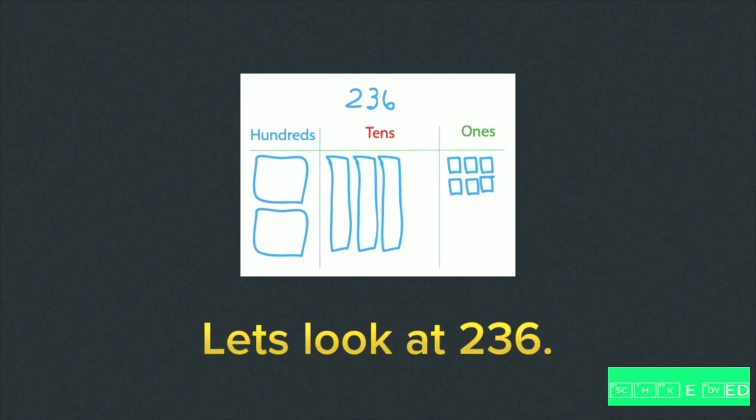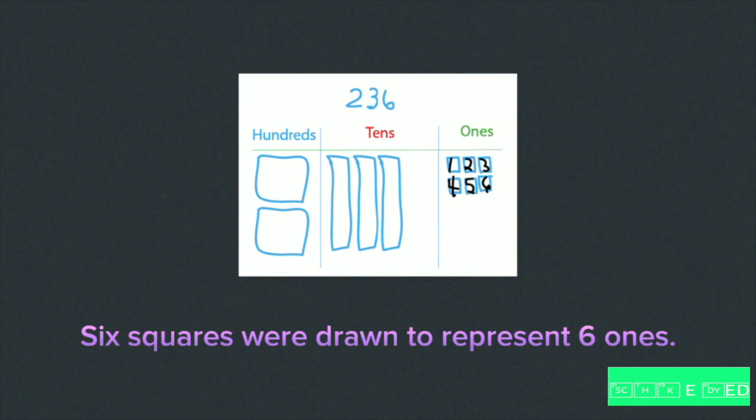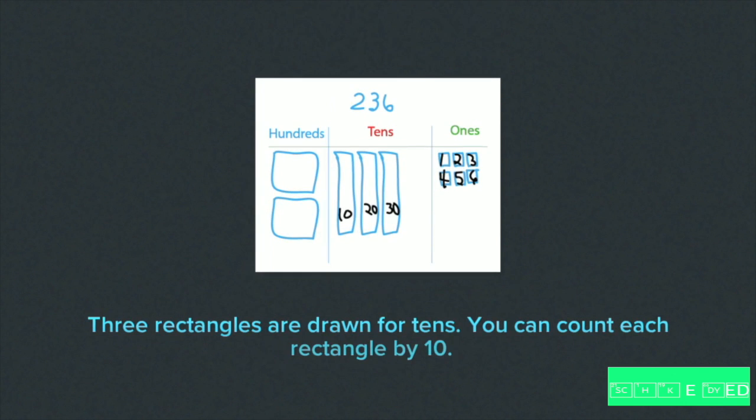Now let's look at the number 236. Six squares are drawn to represent six ones. Each square is labeled. Three rectangles are drawn for tens. You can count each rectangle by 10, 20, 30.